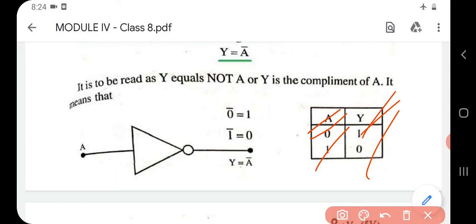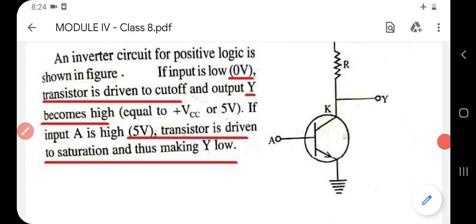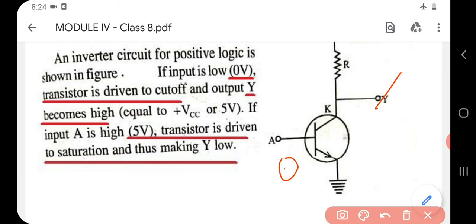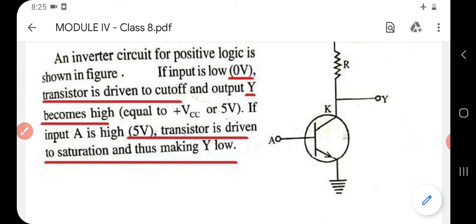Truth table for the NOT gate: if input A is zero, output Y is one; if input A is one, output Y is zero. The operation using a transistor: if the input is zero volts (low), the transistor is driven to cutoff, and in cutoff the output is high — plus five volts, state one. If the input is one (high), the transistor enters saturation, and in saturation the output Y is zero (low).